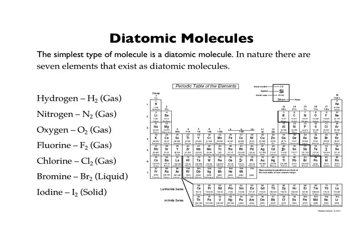Here are a couple of tips and tricks on how to remember them. First off, if you look at a periodic table and color in all seven of these, you will notice that they form the number seven. Six of them form a seven on the periodic table, and there are seven of them total. It is a convenient way to remember it — just find the seven. The halogen family is part of that; that's like the line for the seven. And then you've got nitrogen and oxygen next to it, and hydrogen as well.